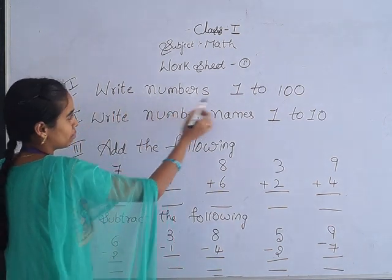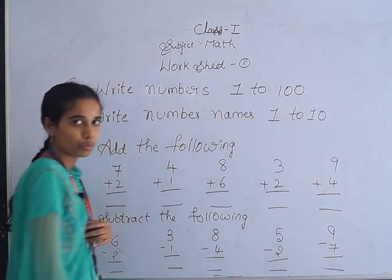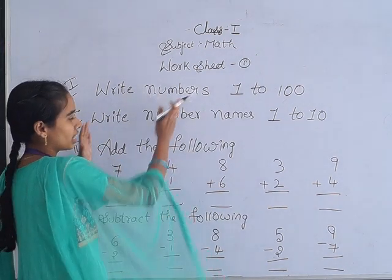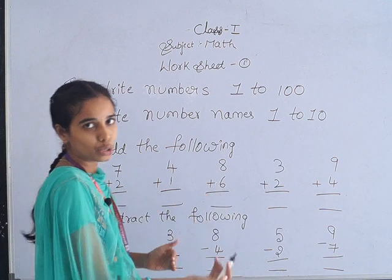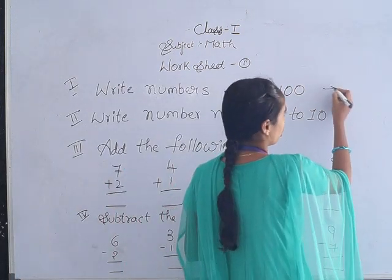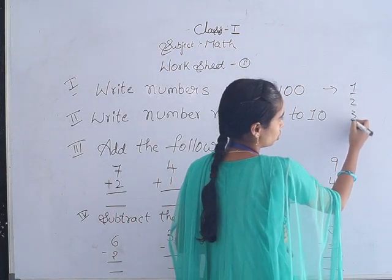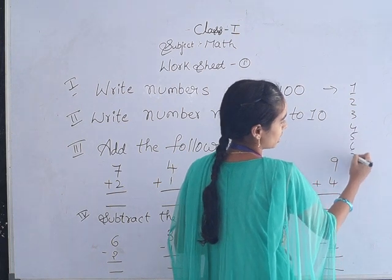After writing 'first bit', you have to write numbers one to hundred. You already know these numbers: one, two, three, four, five, six, seven, eight, nine, ten - like this you have to write in your book. This is about the first bit.